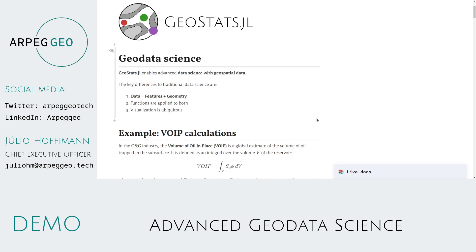Geodata science differs from traditional data science in a few aspects. First, the datasets can always be decomposed into a set of features — numeric and textual values usually — and a special feature called geometry, which is not considered by traditional data science platforms. Geodata scientists are often interested in applying functions to both these components, the features and the geometry, and visualization is ubiquitous.